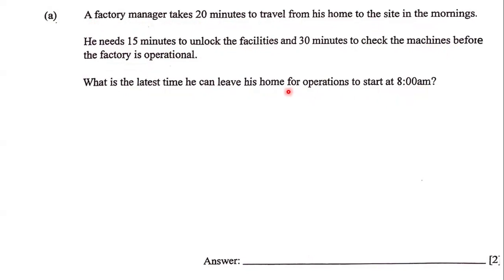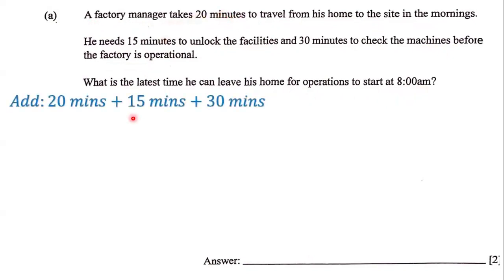In order to do this, the first thing we're going to do is add up all of these times. So we're going to add the 20 minutes for travel from his home to the site, the 15 minutes to unlock the facilities, and the 30 minutes to check the machines. So 20 plus 15 plus 30 is going to be 65 minutes.